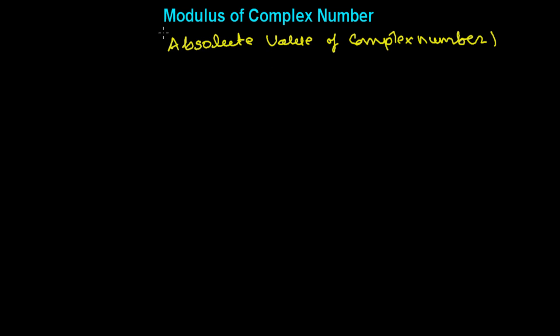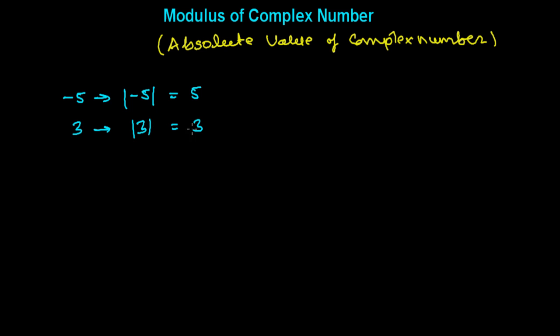In this presentation we're going to learn modulus of a complex number, also called absolute value of a complex number. It is just like in the real number system — for example, the absolute value of minus 5 is 5, and the absolute value of 3 is 3. Modulus or absolute value always gives a positive result.